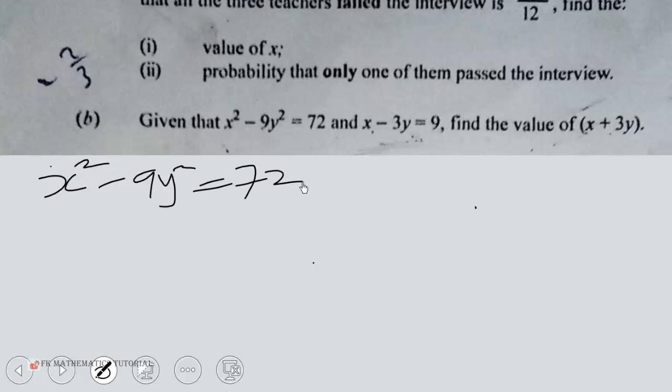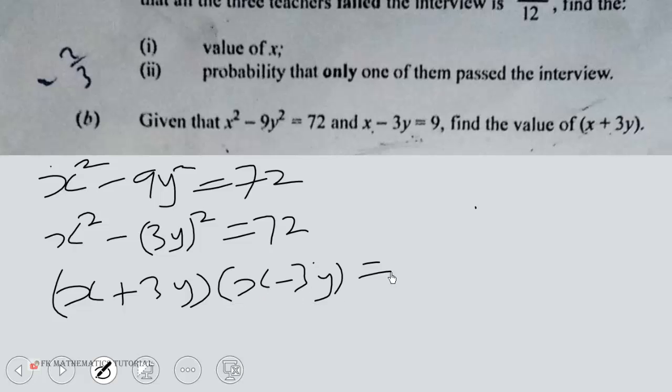So we have x squared minus 9y squared equals 72. You can spot some difference of two squares here. So you can see that this thing is the same as x squared minus 3y all squared equals 72. So this is the same as x plus 3y times x minus 3y equals 72. Now we're given that x minus 3y is 9. So 9 times x plus 3y is equal to 72.